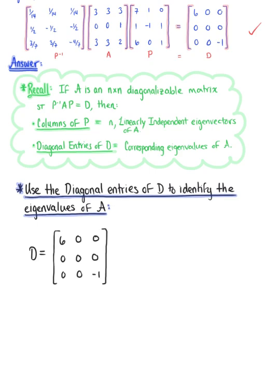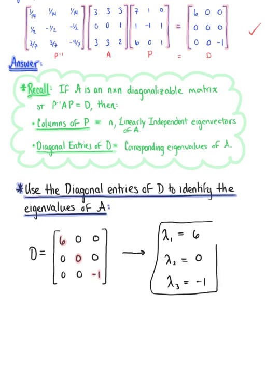Looking at the diagonal entries of D, we see that we have eigenvalues λ₁ = 6, λ₂ = 0, and λ₃ = −1. So these are the eigenvalues of matrix A.